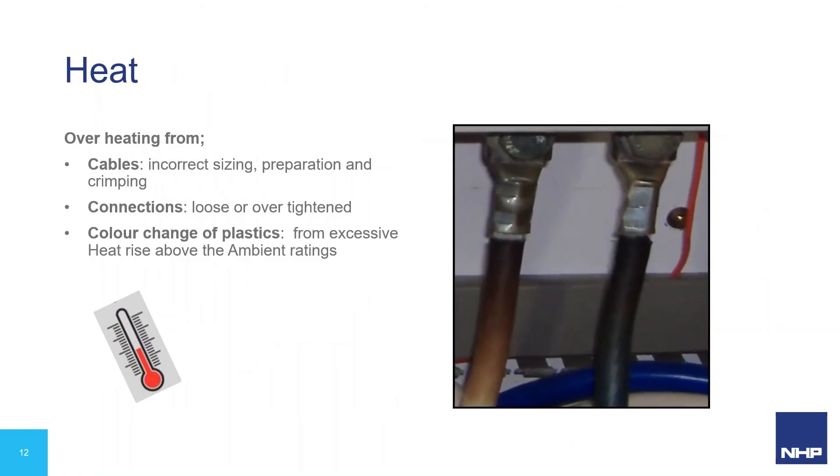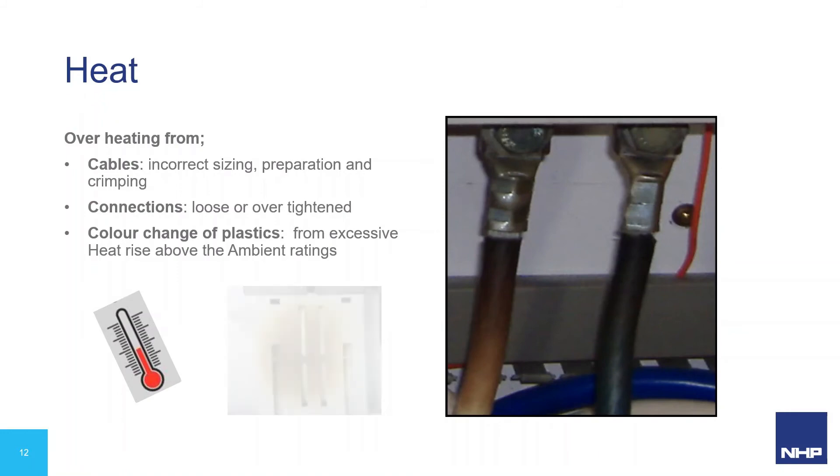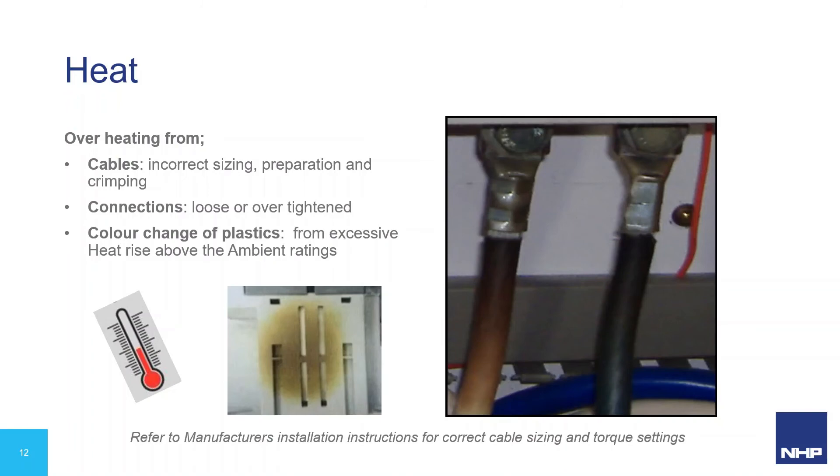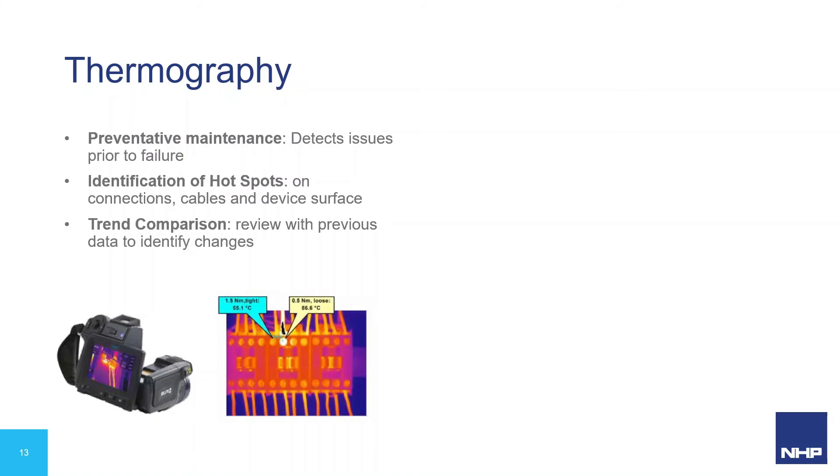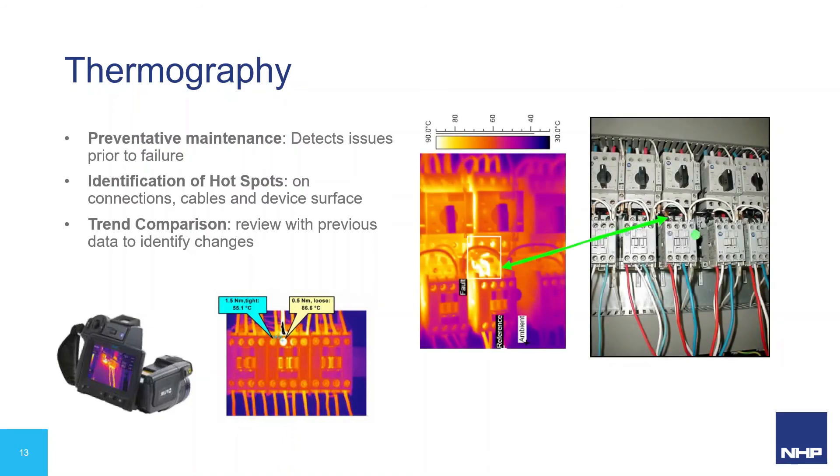With contactors designed for operation in 60 degree ambient temperature and terminal temperatures up to 105 degrees C, heat issues are generally from other factors which may lead to early failure of a contactor. Visual inspections look for browning or deformation of plastics or cable insulation, which may be the result of incorrect cable sizing or cable preparation and crimping, or incorrect tensioning of connections, but it can sometimes be an indication of end of contact life causing high contact resistance.